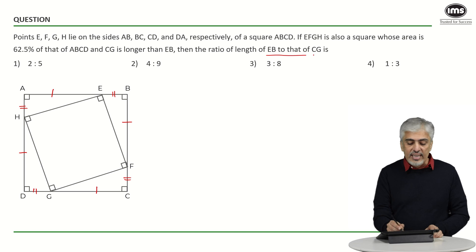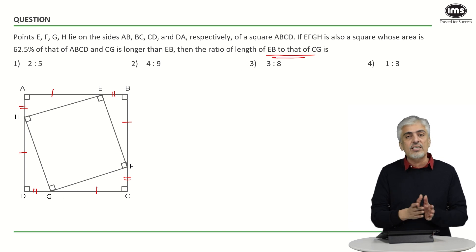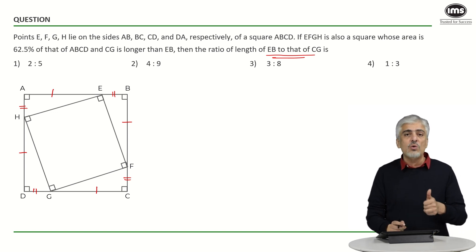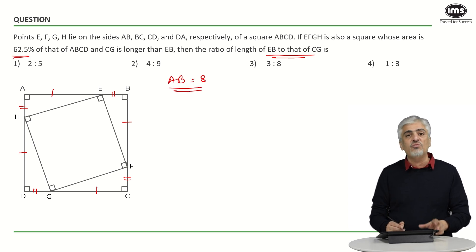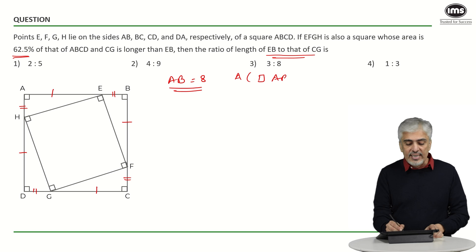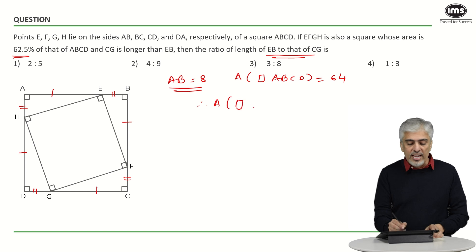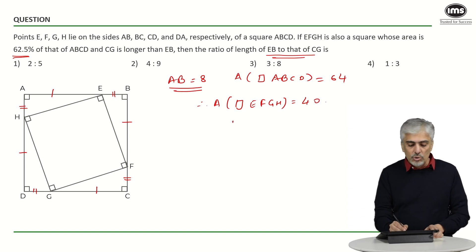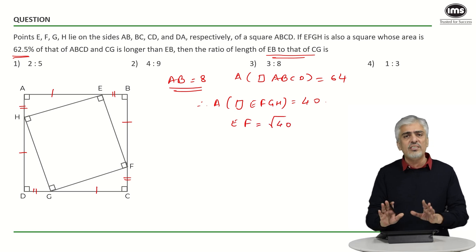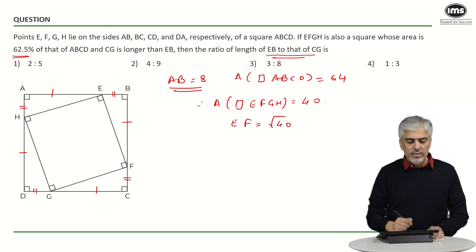They have asked us the ratio of the length EB to CG. EB to CG — so the answer obviously has to be less than 1 since EB is the smaller side. I decided to start with a value: let the side AB be 8. Why 8? Because 62.5 percent is 5/8, so I took AB as 8. The area of square ABCD becomes 64, and therefore the area of square EFGH becomes 40. So the side EF would become √40 — just leave it there.